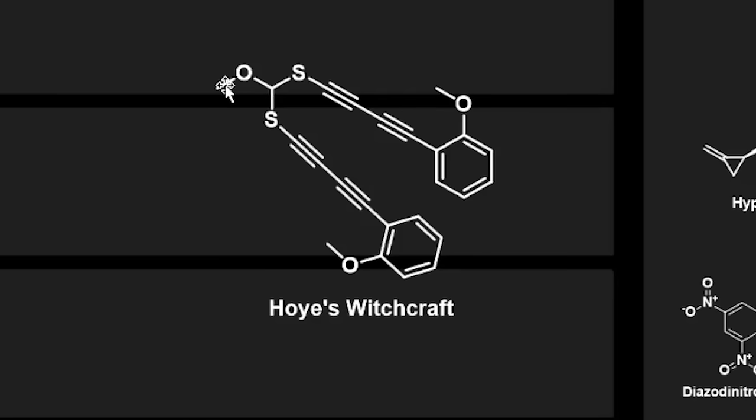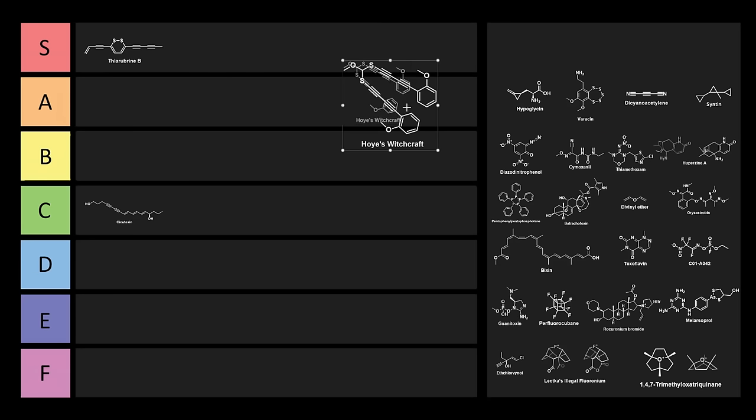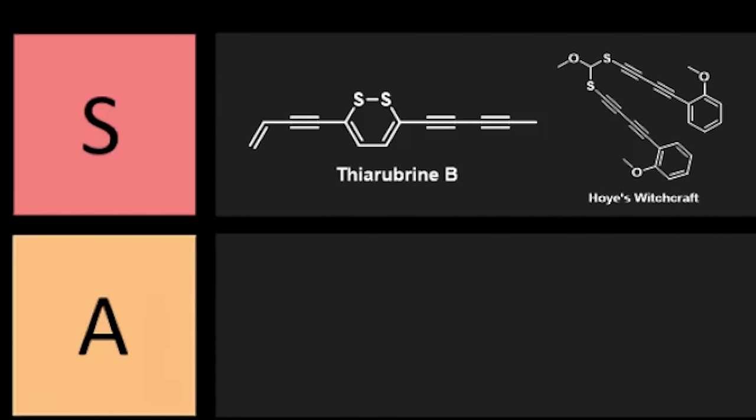We have this orthoester with two sulfur species, a sulfur alkyne, another alkyne, and then benzene rings. This thing is extremely cursed. This is going to go right into S here. Hey, did anybody notice how there's sulfur in that too?